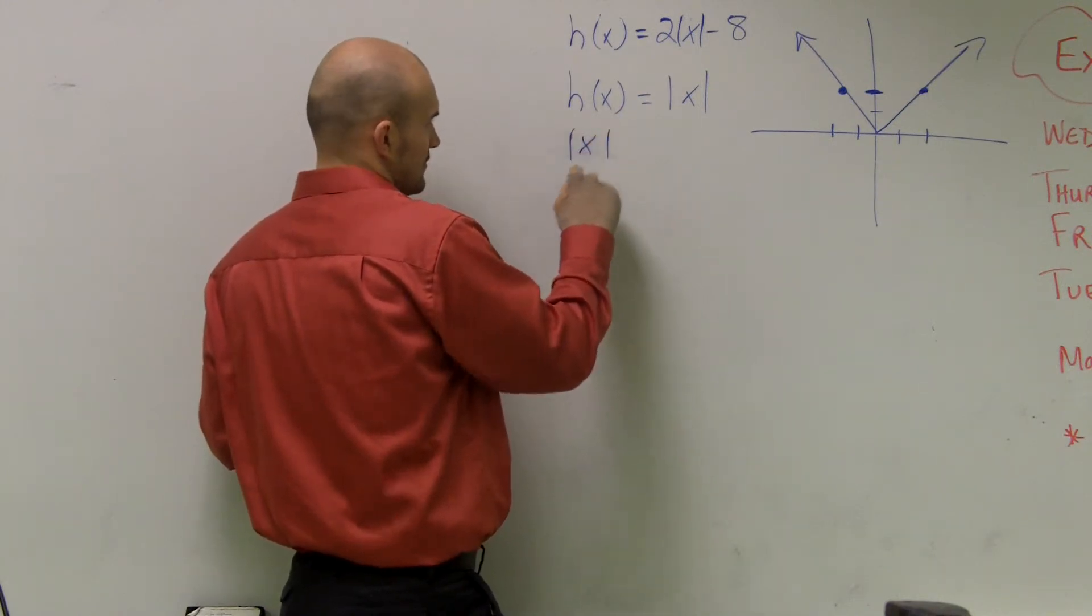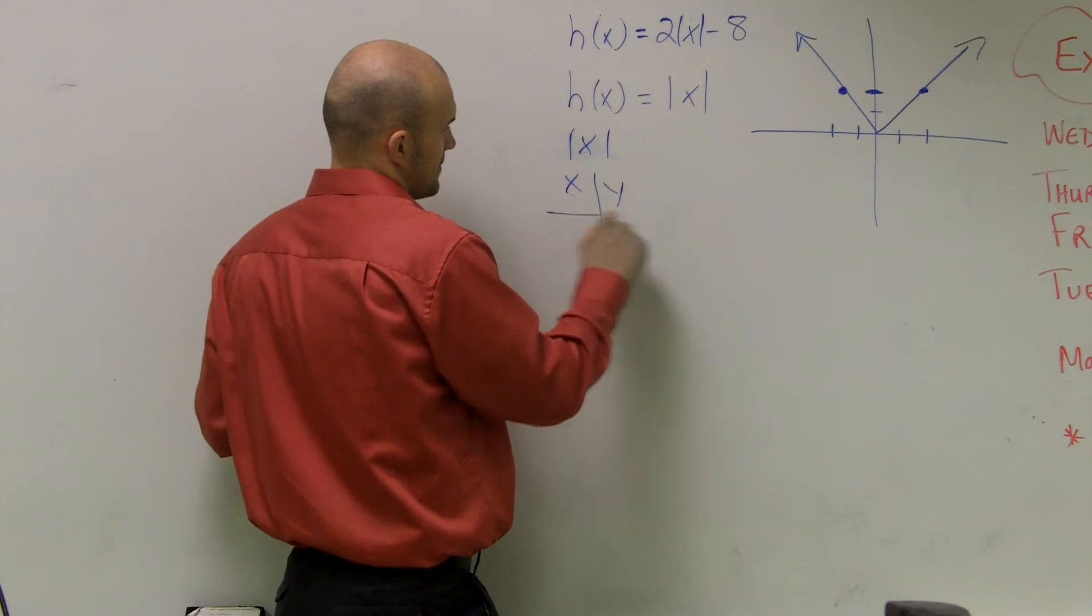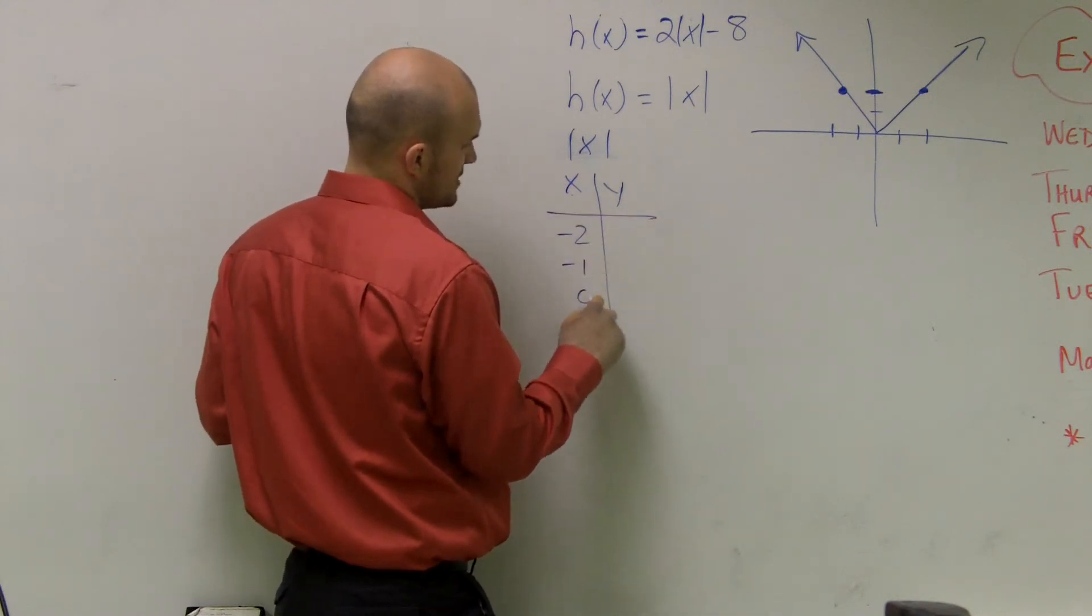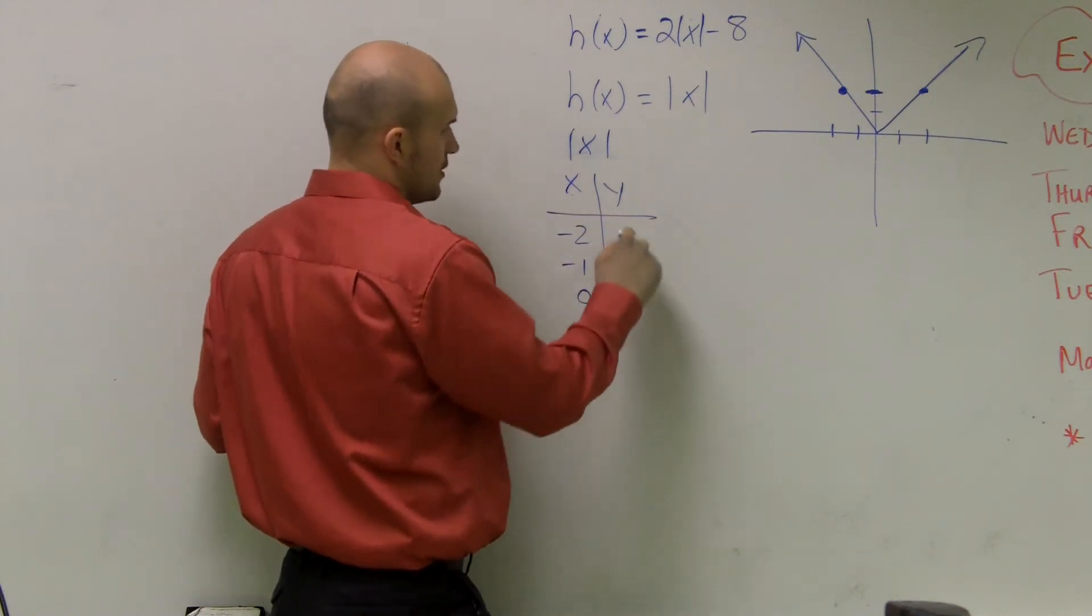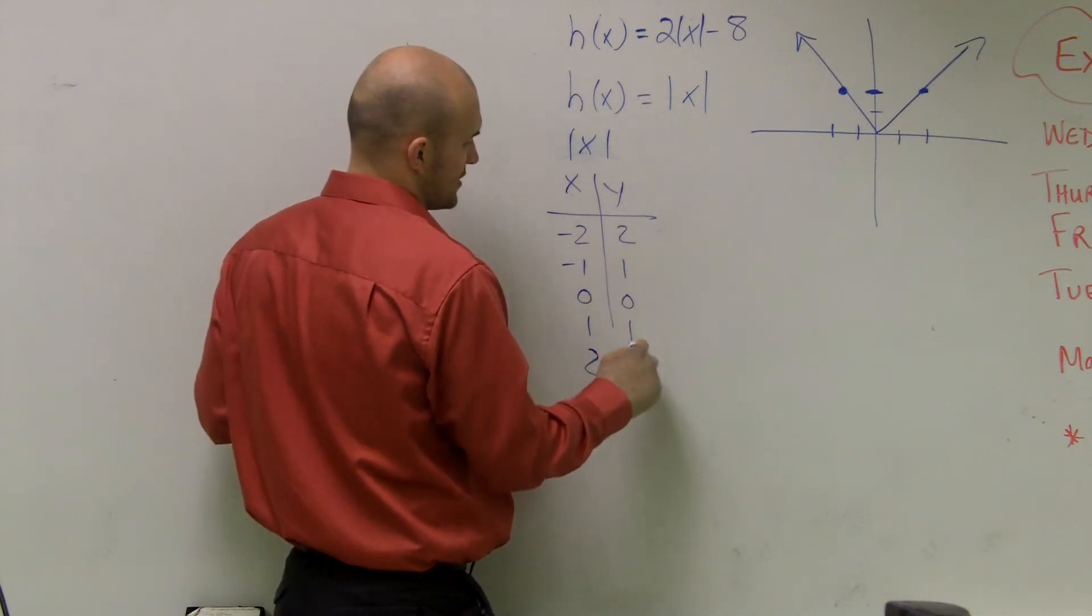xy, let's just do like negative 2, negative 1, 0, 1, and 2. Well, it's going to give me the positive values, right?